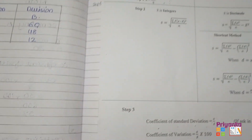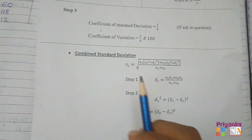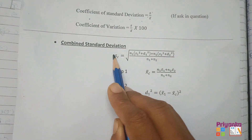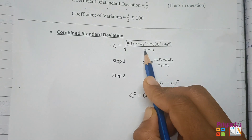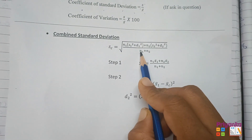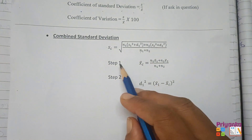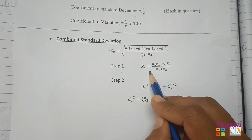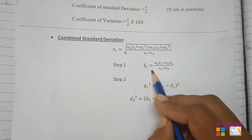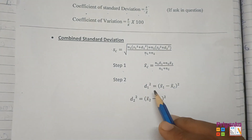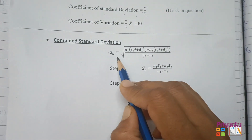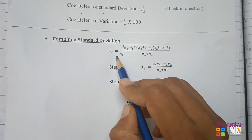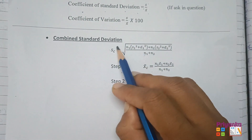I will first introduce the main formula to find out the combined standard deviation. This formula has to be applied in steps. Step 1 is to find out the combined mean. Step 2 is to find out d1 and d2. Step 3 is to find out the combined standard deviation, where all this information will be kept.